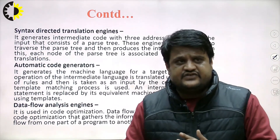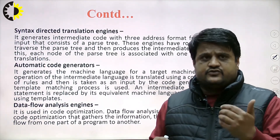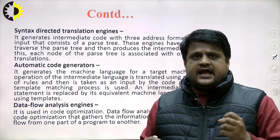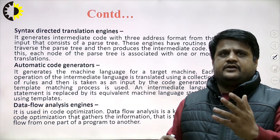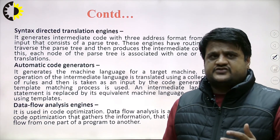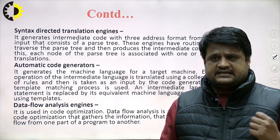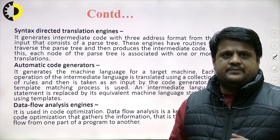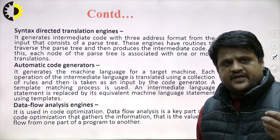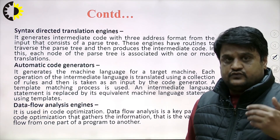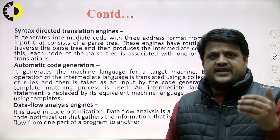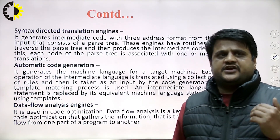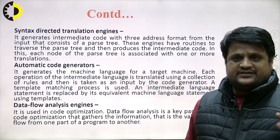The third tool is the syntax-directed translation engine. It generates intermediate code with three-address formats from a parse tree as input. These engines have routines to traverse the parse tree and produce intermediate code, where each node of the parse tree is associated with one or more translations. The fourth tool is automatic code generators, which generate machine language for the target machine. Each operation of the intermediate language is translated using a collection of rules taken as input by the code generator. A template matching process is used: an intermediate language statement is replaced by its equivalent machine language statements using templates.